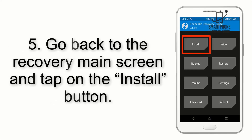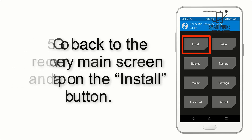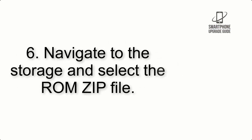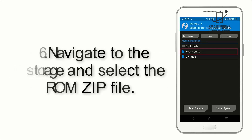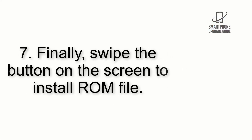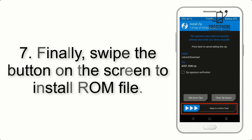Step 4: Swipe the button to wipe the device. Step 5: Go back to the recovery main screen and tap on the Install button. Step 6: Navigate to the storage and select the ROM zip file.